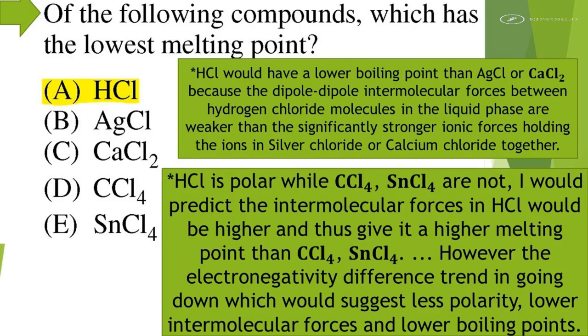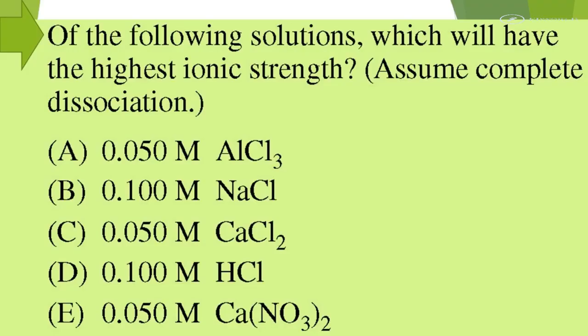HCl is polar while carbon tetrachloride and tin chloride are not. I would predict the intermolecular forces in HCl would be higher and thus give it a higher melting point than carbon tetrachloride and tin chloride. However the electronegativity difference trend in going down would suggest less polarity, lower intermolecular forces and lower boiling points.